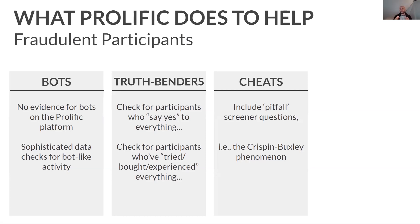The third type of bad participants are cheaters. Truth benders will lie to get into your study, whereas cheats just provide bad data once they are in your study. This might include having a pen and paper by the side of the computer during a memory check, or perhaps they just don't understand what you're asking them to do or think their reward is tied to their performance. One of the ways we check for this in our participant pool is to include pitfall screener questions. All participants who sign up with Prolific are asked the same question: are you aware of the Crispin-Buxley phenomenon? We find that about 1.8% of our participants do say yes — but of course, there is no such thing as the Crispin-Buxley phenomenon. So anybody saying yes is likely not telling the truth.